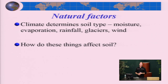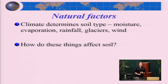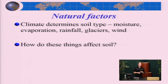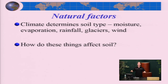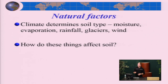Climate also has a huge impact on soil type — whether it's how much rain and moisture you get, humidity, evaporation from the soil, rain, snow, ice, whether the soil freezes, glaciers, or wind. All of these control how much water is in the soil, its structure, what plants can grow there, and thus the organic materials. Climate affects both living and non-living components. We'll talk about these climate effects when we classify soil types in lecture 18.